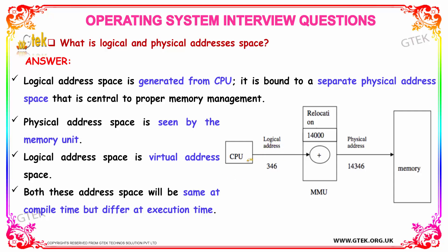For example, our logical address space is 346, whose exact physical address would be 14346 in memory. This is the difference between a logical and physical address space.